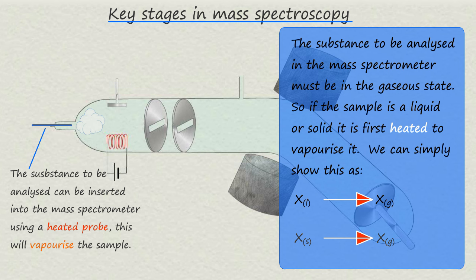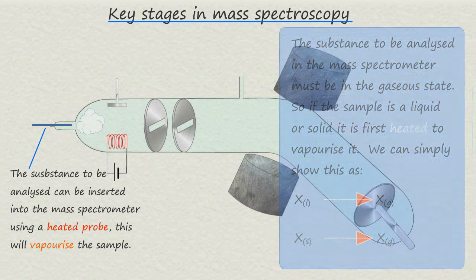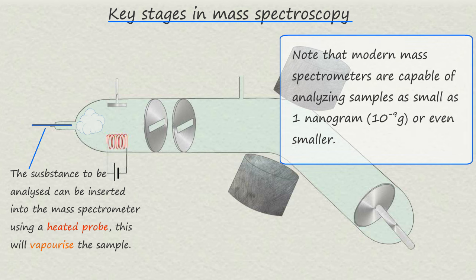It is worth mentioning that modern mass spectrometers are capable of analyzing very small samples. Somewhere in the region of one nanogram or even smaller samples can be analyzed.